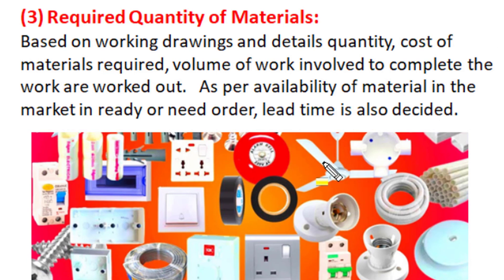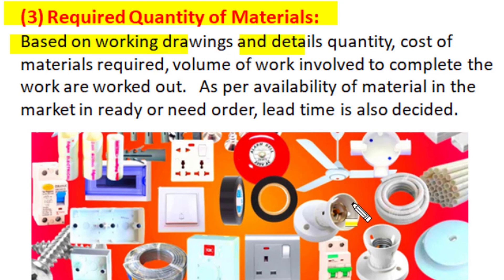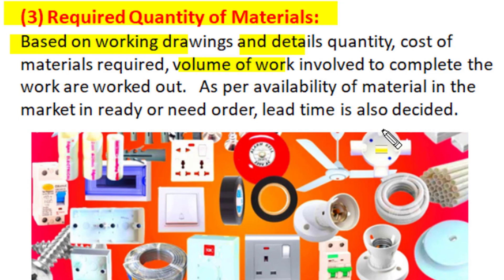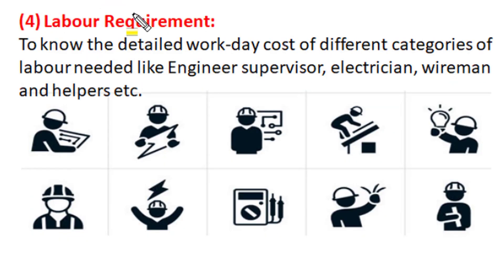After selecting the type of electrical items and workmanship, the required quantity of those materials and workmanship has to be assessed based on working drawings and specification details. The quantity and cost of material involved in project installations are calculated, and the volume of work to be carried out is also worked out. It is also assessed what availability those materials have in the market — if readily available there is no issue, but if an order is needed, the lead time must be considered so that orders can be placed well before actual requirement.